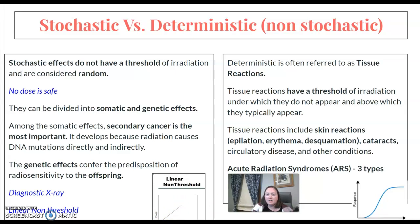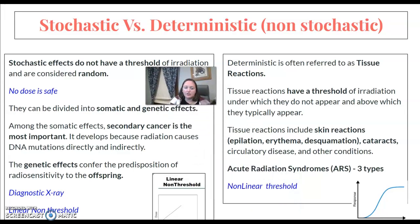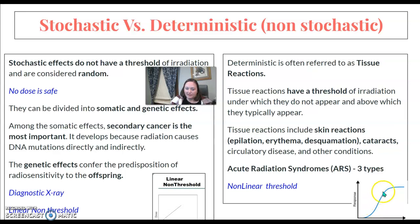Deterministic effects are often referred to as tissue reactions. In the past, we called them non-stochastic. These are going to have a threshold and are non-linear. Your deterministic effects follow a non-linear curve with a threshold, so effects start at a certain point. You'll see tissue reactions such as epilation, erythema, and cataracts.